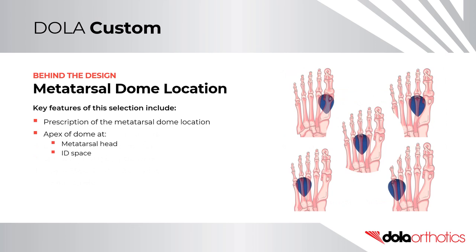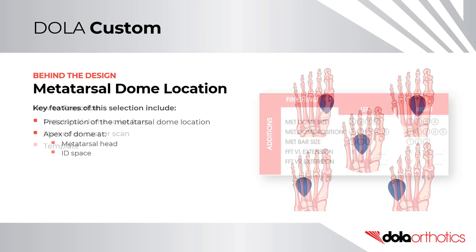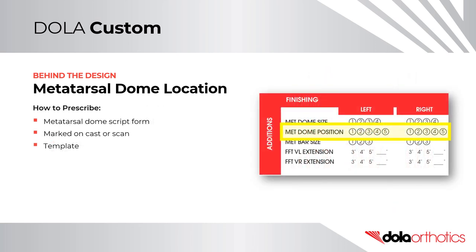Behind the Design – Metatarsal Dome Location. Key features of this selection include the prescription of the exact location for the Metatarsal Dome. The apex of the dome can be placed at Metatarsal Head 1, 2, 3, 4, or 5, or in an interdigital space 1-2, 2-3, 3-4, or 4-5. You can use the Metatarsal Dome Script Form by marking a single number for an apex or two numbers for an interdigital space. You can also mark it on your cast or scan, or use a template.